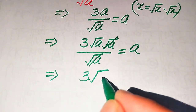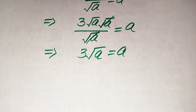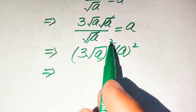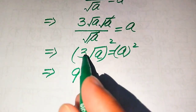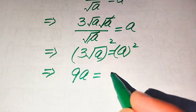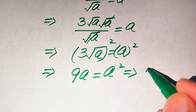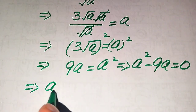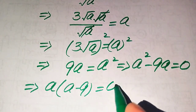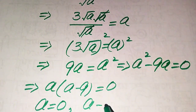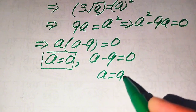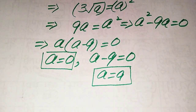The square root of a in the numerator cancels with the square root of a in the denominator, leaving 3 times square root of a equals a. To find the values of a, we square both sides: 3² times (square root of a)² gives 9a = a². Moving 9a to the right-hand side gives a² minus 9a = 0. Factoring out a gives a(a minus 9) = 0, so a = 0 and a = 9 are the two roots, matching our Method 1 results.